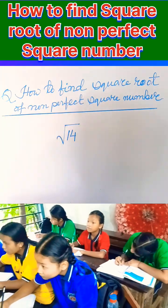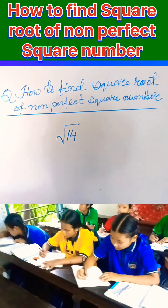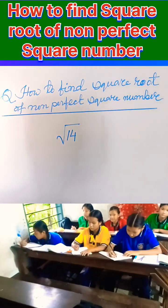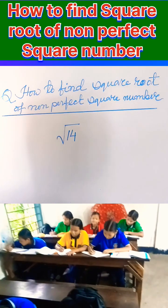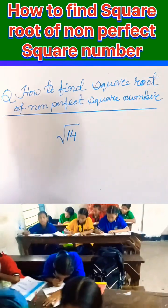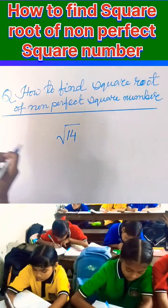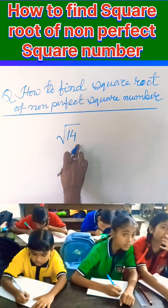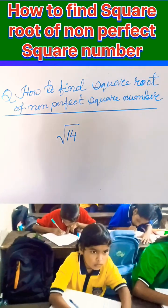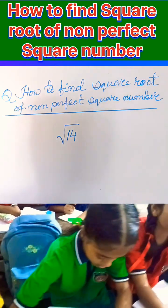So in this video, we are going to learn how to find out the square root of a non-perfect square number, as you can see in the title on the board. So it's 14. 14 is a non-perfect square number.